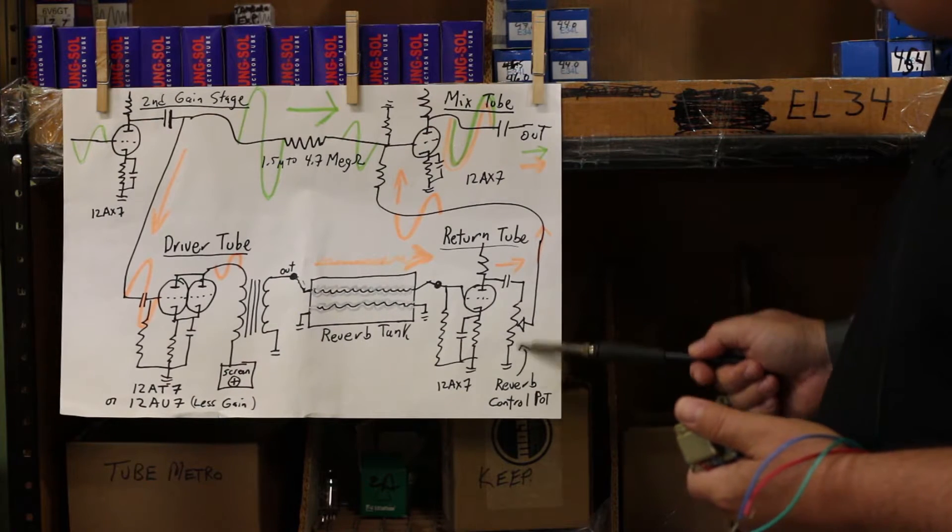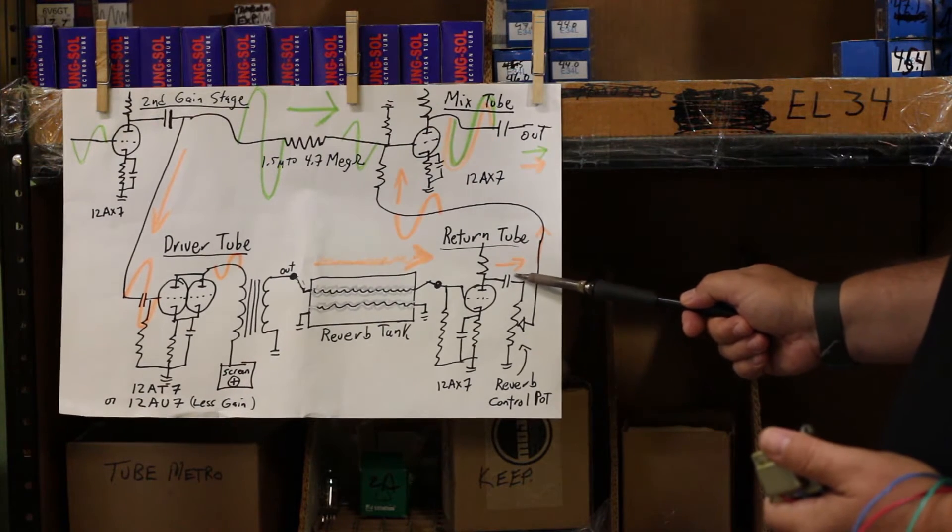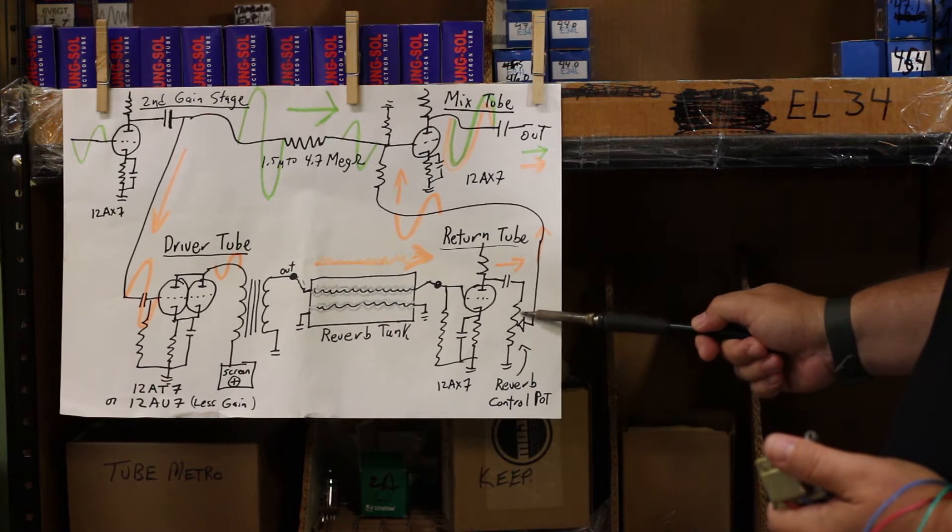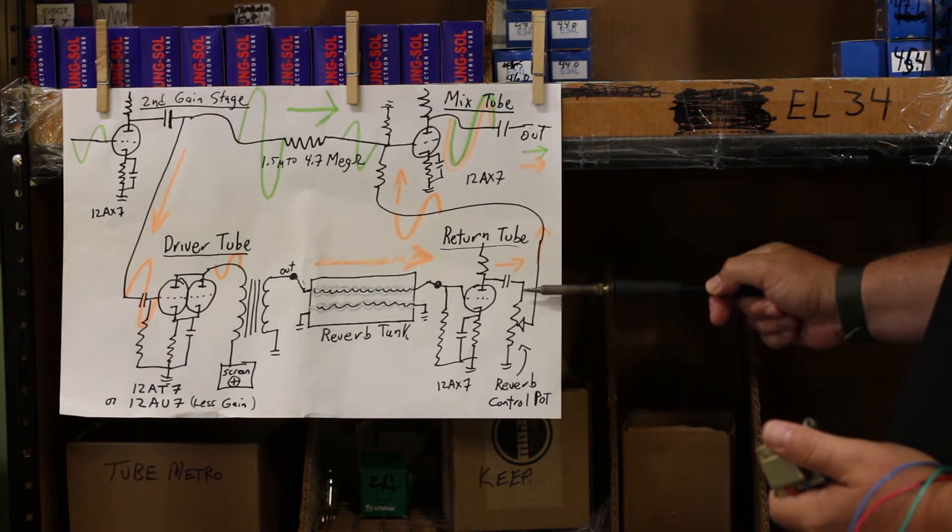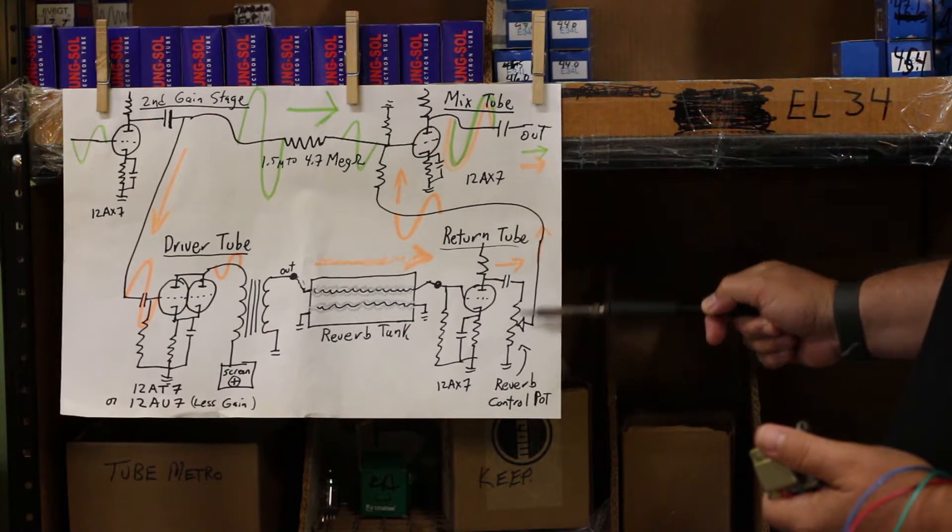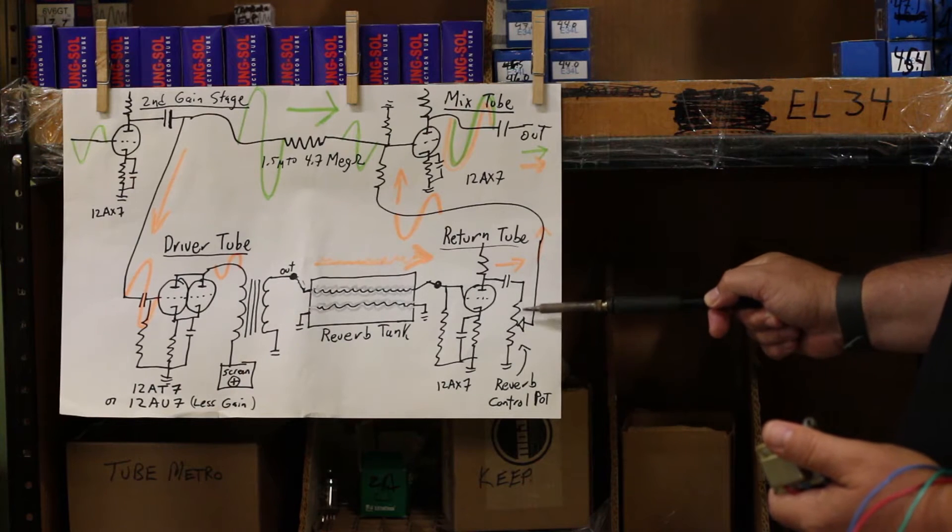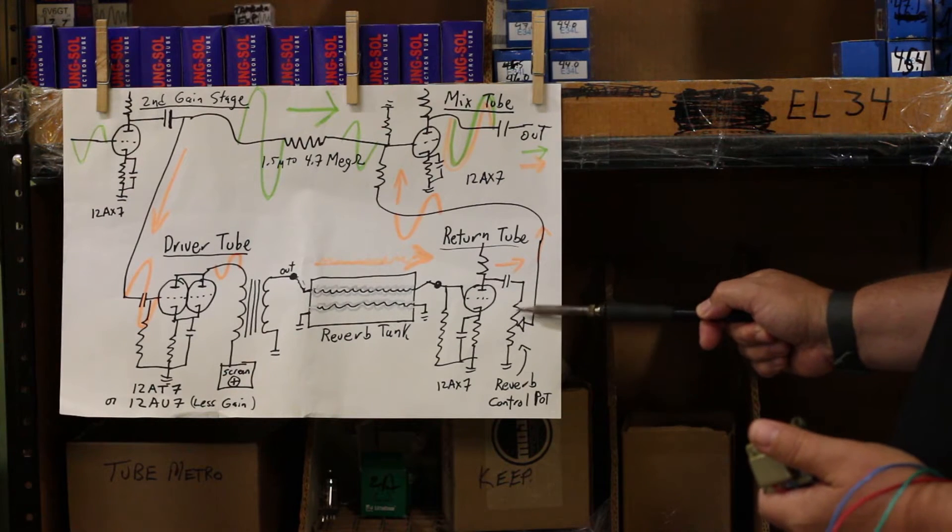There's another 12AT7 gain stage that amplifies that weak output from the tank. And then here's your reverb control. We've got the full signal there, no signal there, and as you move the control, it's like a ladder. You just vary how much signal goes through.